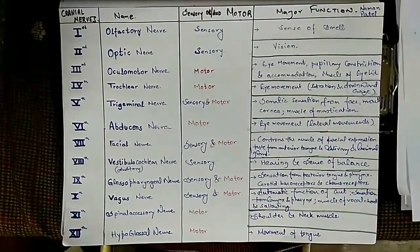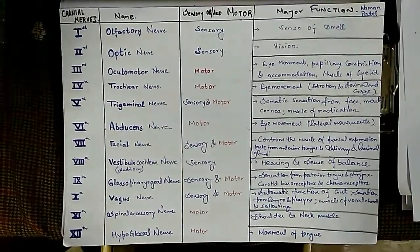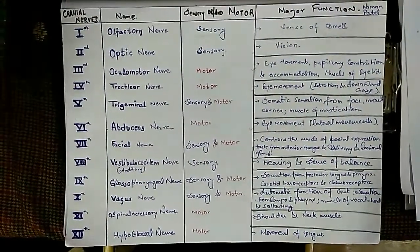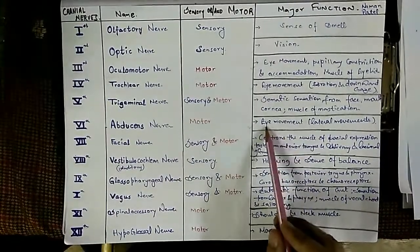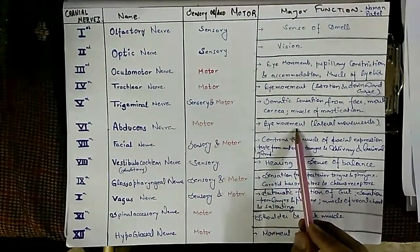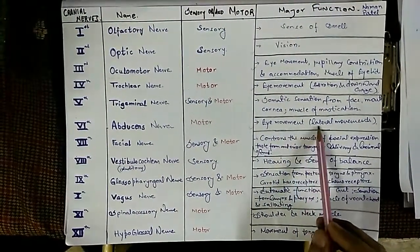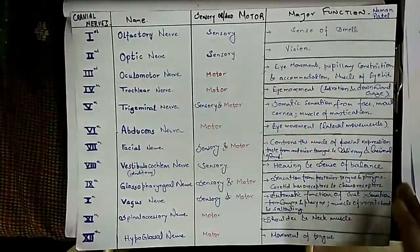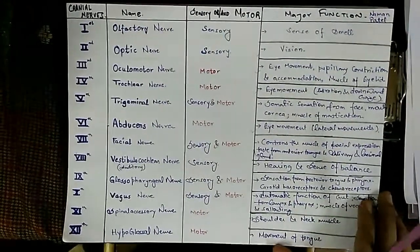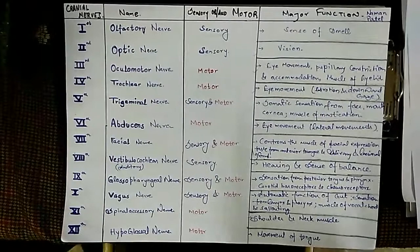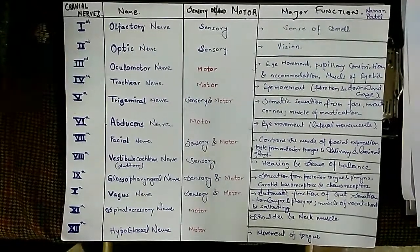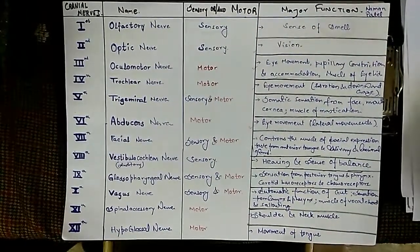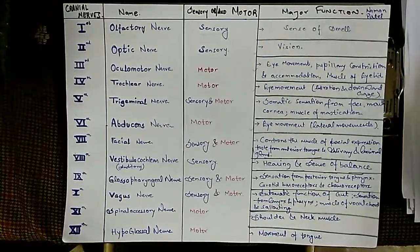The sixth cranial nerve is the abducens nerve. It is specifically a motor nerve and governs eye movement — small lateral movements of the eye, like the subtle side glances you might make.